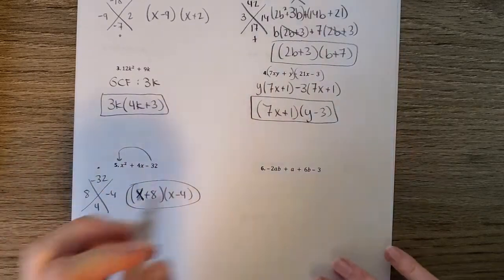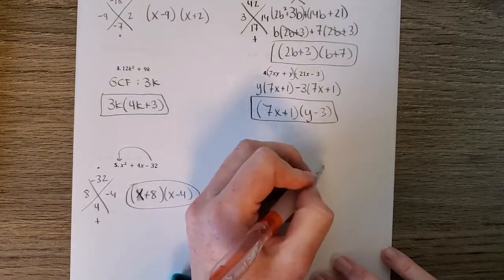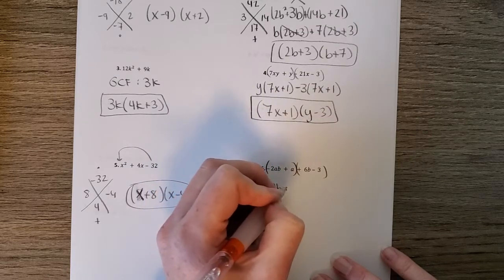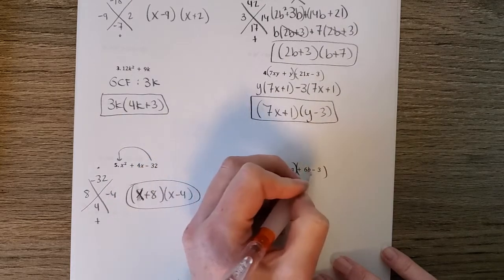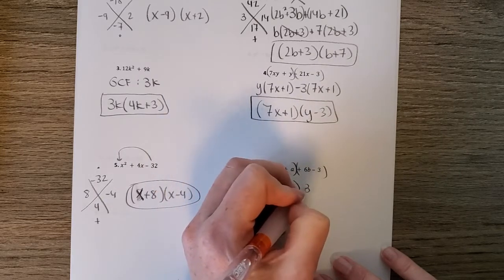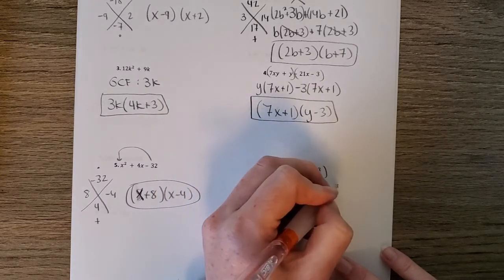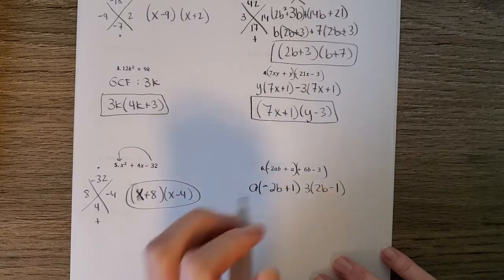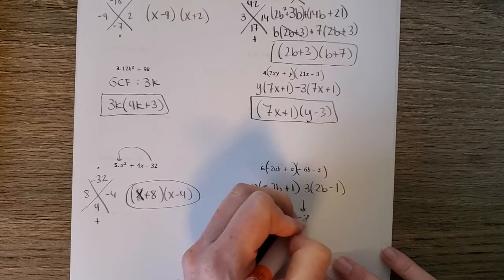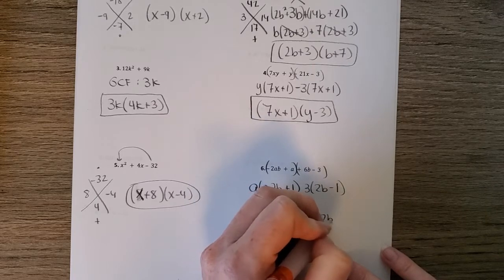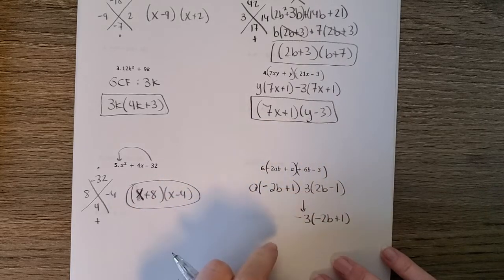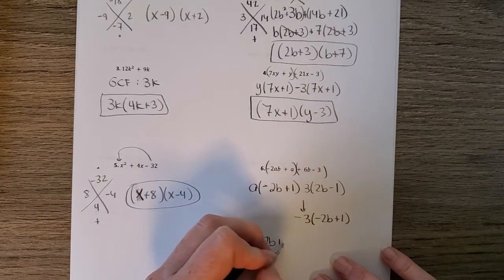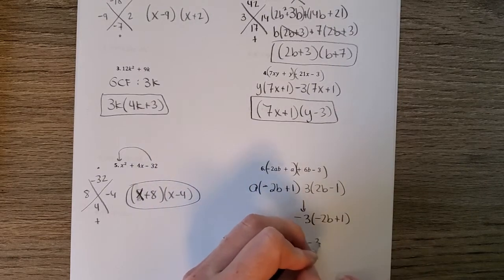And then the last one, 4 terms again. So we're grouping. Take out an a. You get negative 2b plus 1. And over here, if I take out a 3, I get 2b minus 1. And since these don't match, if you remember before, we changed this one to negative 3, which makes it negative 2b plus 1. Change all the signs. And now these do match. So we have negative 2b plus 1 and then a minus 3.